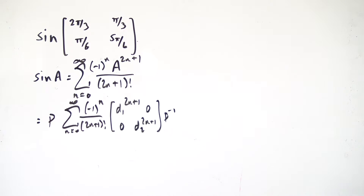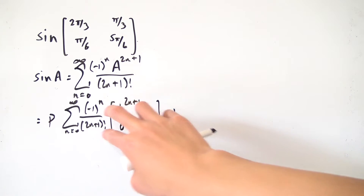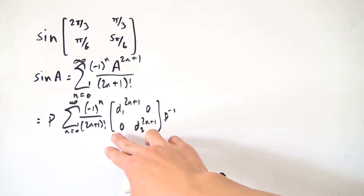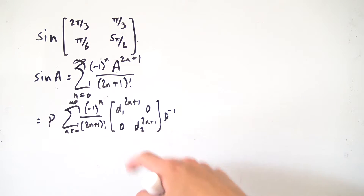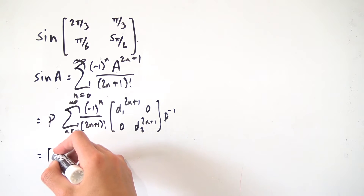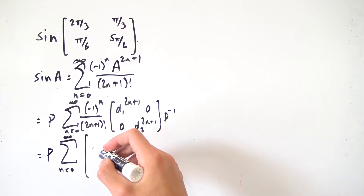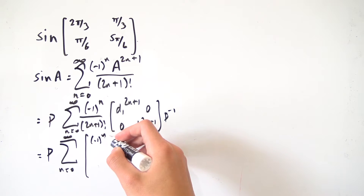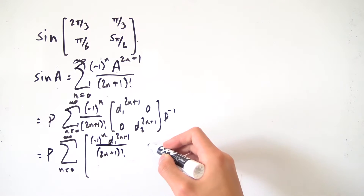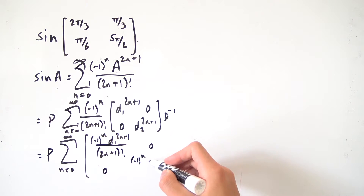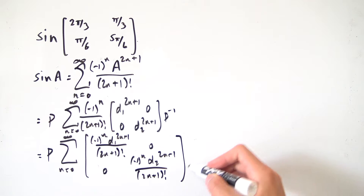Notice we have a matrix with some scalar stuff multiplied into it. Whenever you have something multiplied by a matrix, you multiply that scalar into each of the entries. So if we multiply everything in, we have P times the infinite sum from n=0 to infinity of the matrix with entries (−1)ⁿ d₁^(2n+1) over (2n+1)!, 0, 0, and (−1)ⁿ d₂^(2n+1) over (2n+1)!, times P⁻¹.